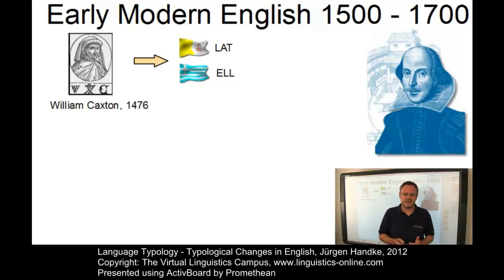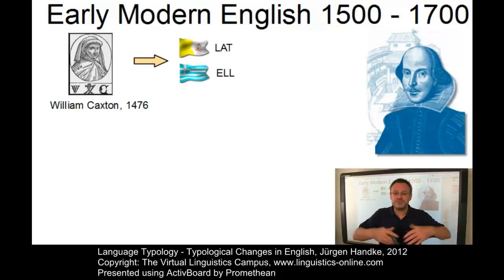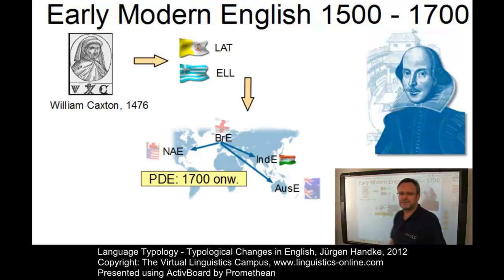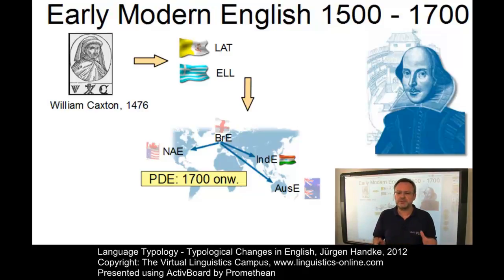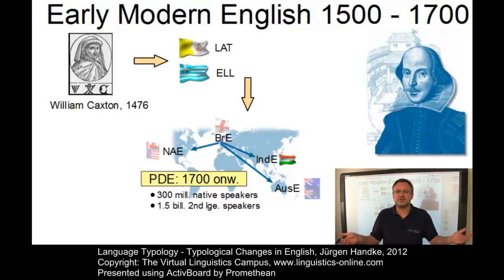By about 1700, the English language differed only slightly from present-day English. The main changes that had begun during the Middle English period were all completed. Second-person verb forms along with the pronouns thou and thee had disappeared from ordinary educated speech, and auxiliary do had come to be used as we use it today. The most important external development after 1700 concerned the position of English among the languages of the world. Colonization had led to the spread of English around the globe. Today, English constitutes the most widely used individual language of our time, with more than 300 million native speakers and about 1.5 billion official users, and its main branches are British and American English.